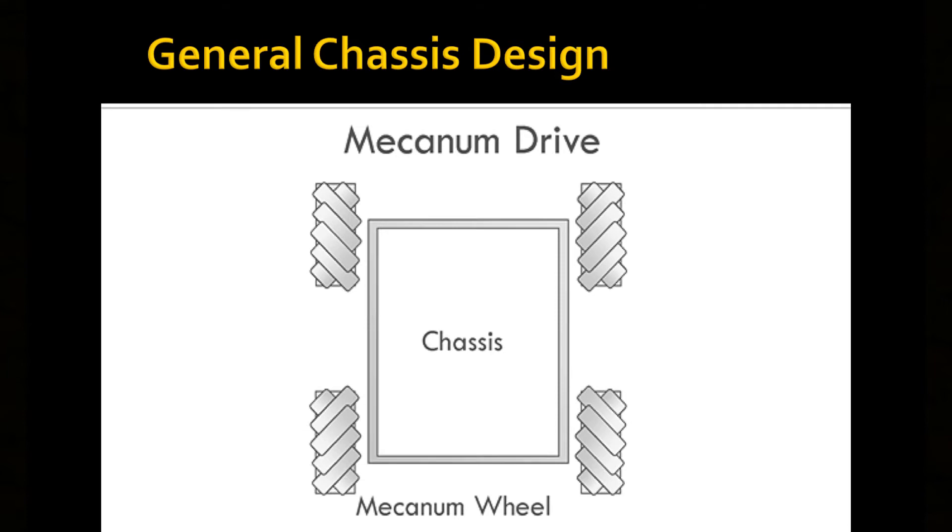A mecanum drive is special because it has two different types of wheels, a left set and a right set, so it's important to both buy and keep track of both sets of wheels.